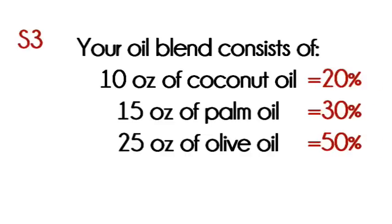Step 3: 10 ounces of coconut is 20%, 15 ounces of palm is 30%, and 25 ounces of olive is 50%. Fairly simple math, right?